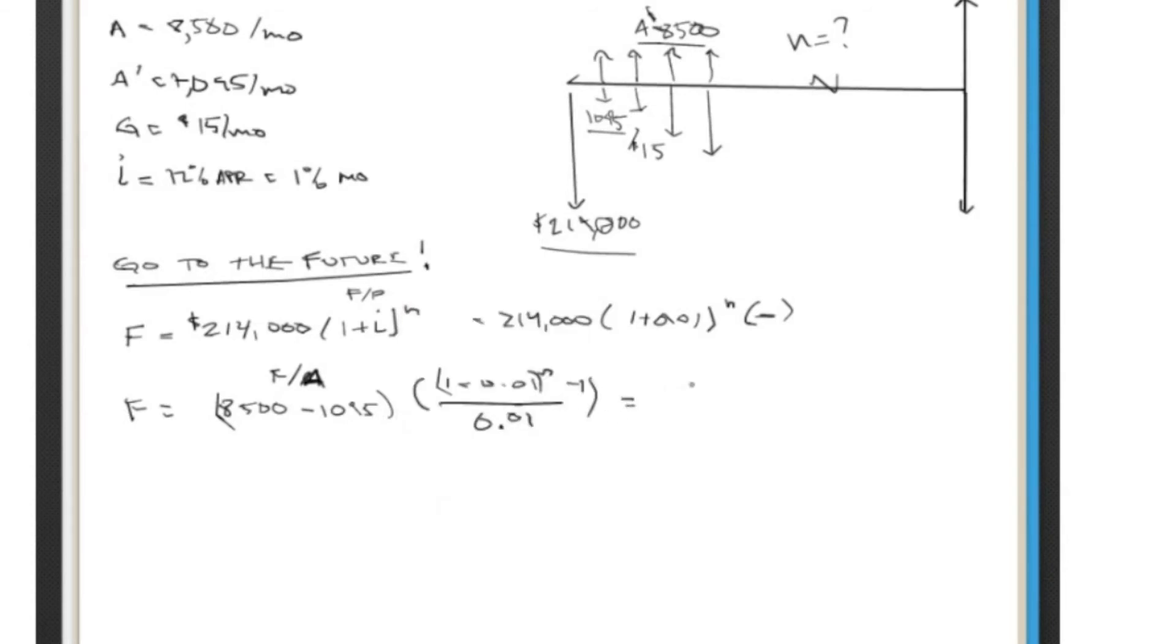So we end up with, if we do all of it here, $7,405 times (1.01^n - 1). And looking here, the 8,500 and the 1,095, we end up with a number above the line, so we'll put a little plus sign in parentheses here.